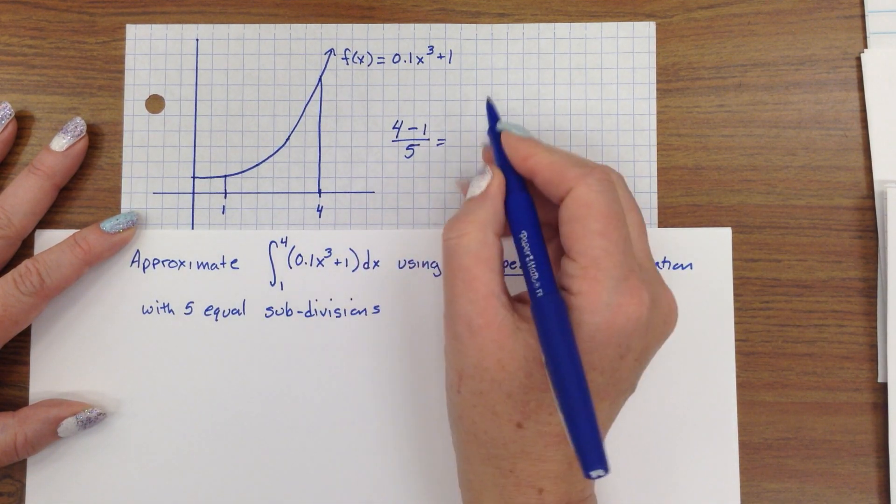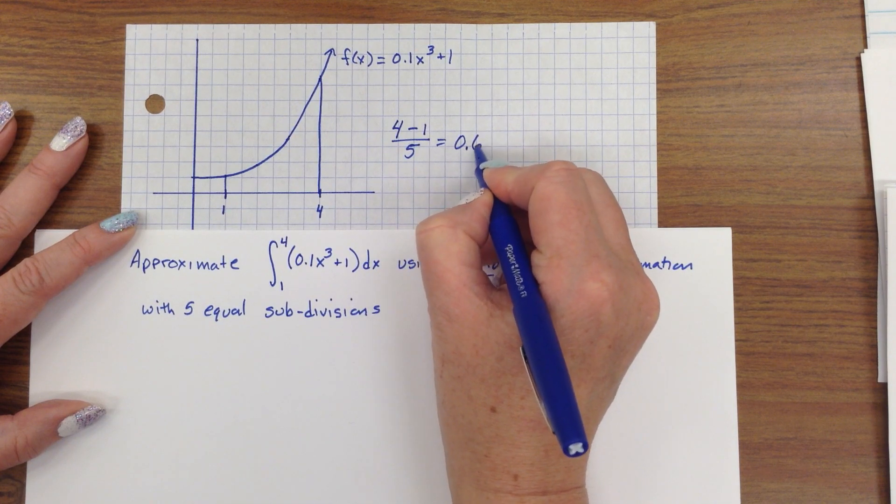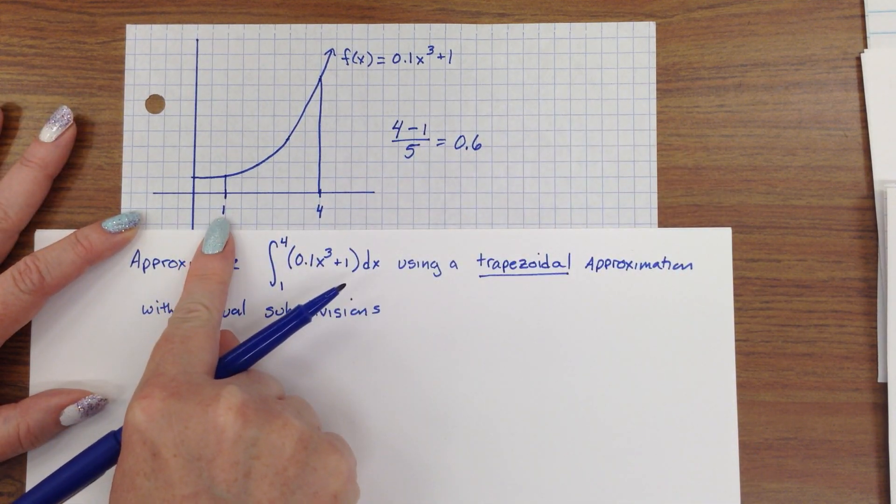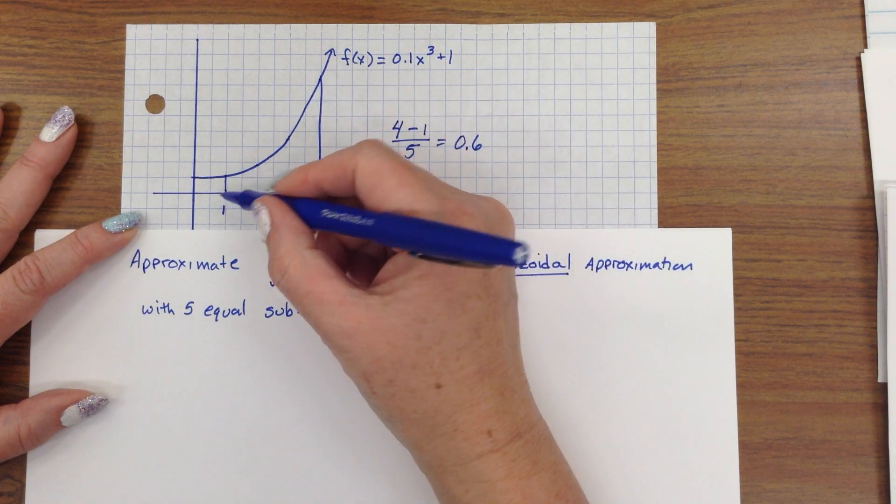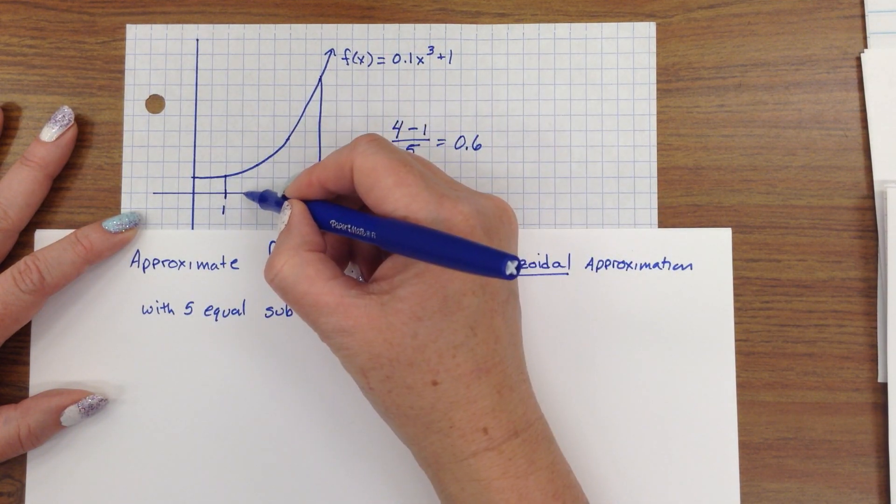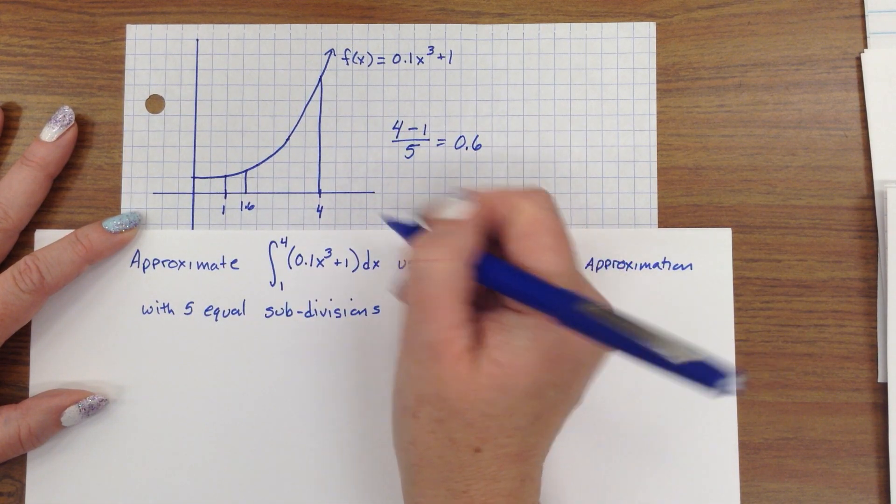So, we take the end of the interval 4 minus the beginning of the interval 1, and we divide it into 5, because it said so, equal pieces. So, this is 3 divided by 5, which is 0.6. So, starting at the 1, I'm going to add 0.6. These are counting every other space, so 1.6 is right about there. I add 0.6 again,